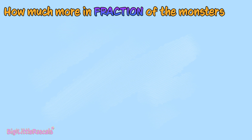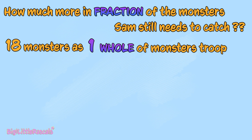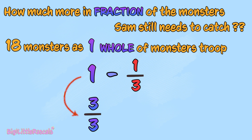And how much more in fraction does Sam still need to catch? Sam has caught 1 third of 18 alien monsters. Let's put the total 18 alien monsters as one whole lot of monster troop. So, 1 minus 1 third. First, let's change 1 to fraction form: 3 out of 3, because 3 divided by 3 equals 1. But why do we use number 3? So it matches with 1 third — the bottom number is the same, so we can subtract the fraction easily.